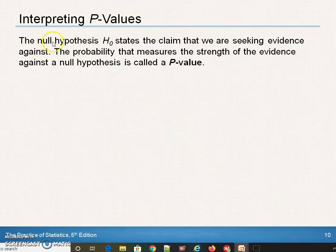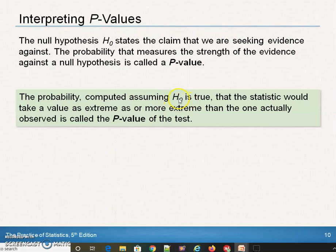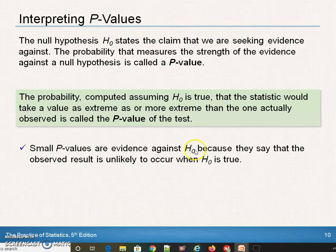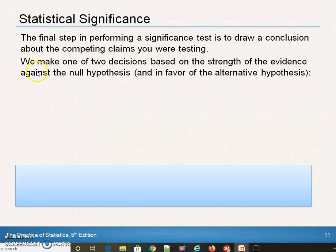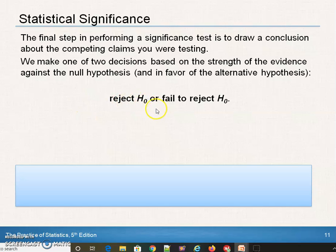The p-value is the area in the tail — to the left or to the right — where that data places you. The probability is the strength of that evidence, computed assuming the null hypothesis is true. The statistic finds its place on that distribution, and you figure out what the tail area is. Small p-values are evidence against the null hypothesis — they say the observed result is unlikely. Large p-values fail to give convincing evidence against. Always: evidence is against the null and for the alternative. The final step is drawing conclusions: we either reject the null hypothesis or we fail to reject it.